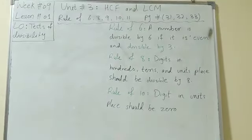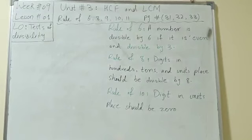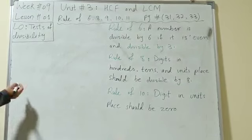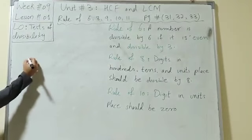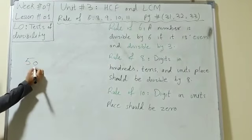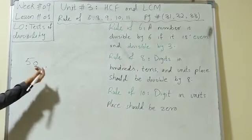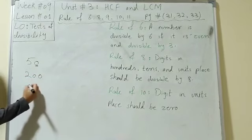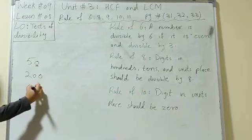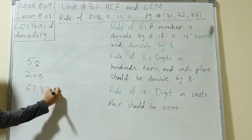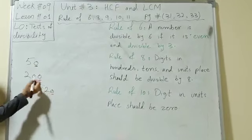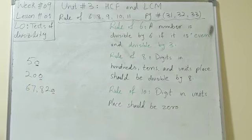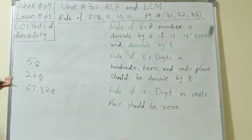The next rule is for 10: the digit in the units place should be 0. For example, 50 has 0 in the units place, so it is divisible by 10.